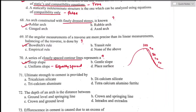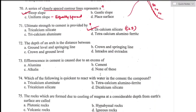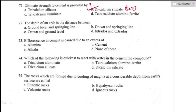Question number seventy-one: the ultimate strength of cement is provided by dicalcium silicate (C₂S). Option B is the right answer. Question number seventy-two: the depth of an arch is the perpendicular distance between the intrados and extrados of the arch. Option D is the right answer.